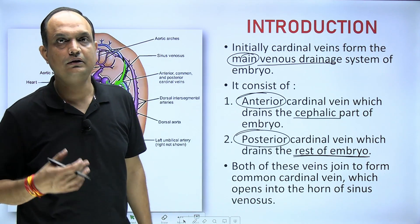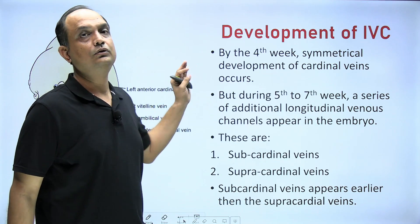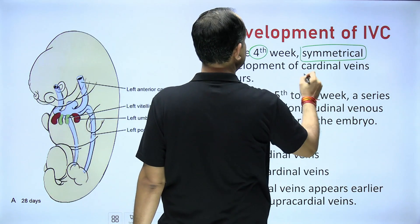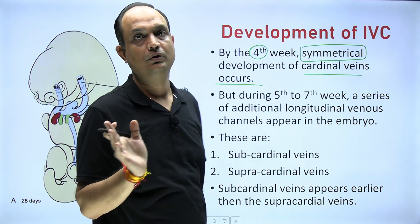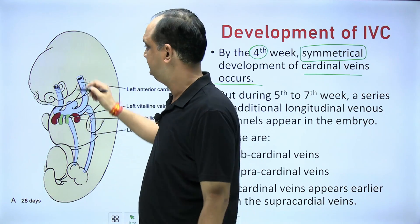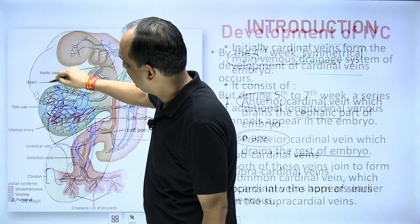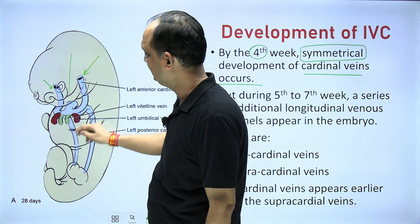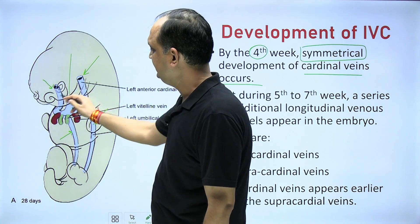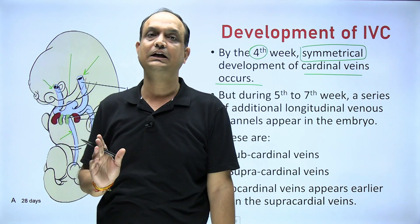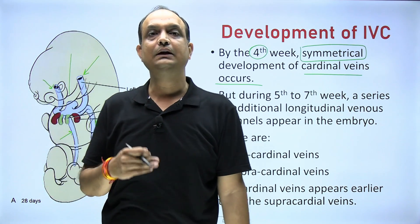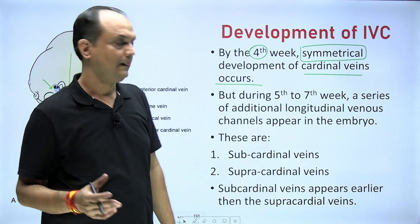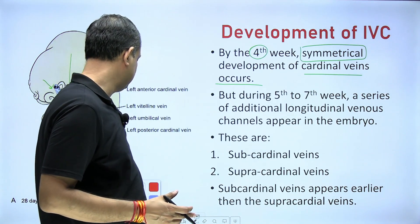When reading the development of inferior vena cava, understand that initially by the fourth week there is a symmetrical development of the cardinal veins on both sides of the embryo. As seen in the diagram, the anterior cardinal vein develops on both sides symmetrically, but as growth advances, this symmetrical development does not persist.